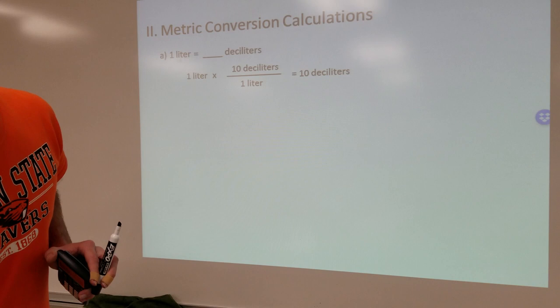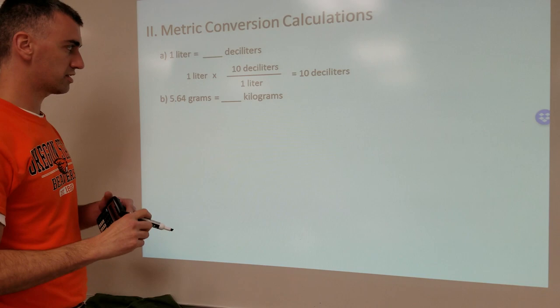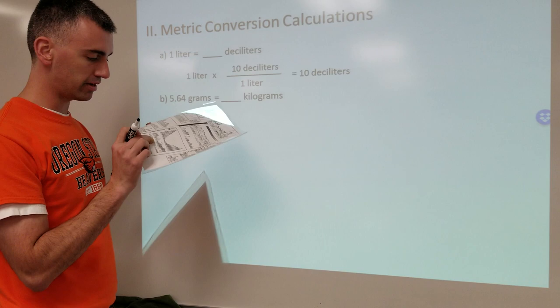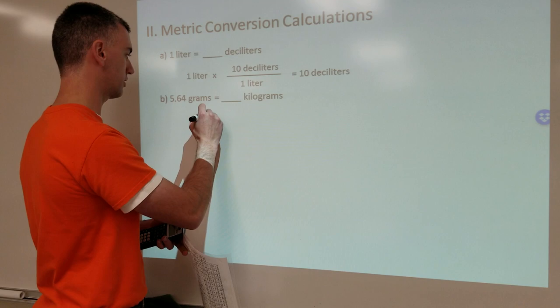5.46 grams equals blank kilograms. So once again, our plan before we do anything. Can you convert grams to kilograms? You look at the chart — kilogram, kilo means a thousand. So a kilogram is a thousand grams, meaning you can do the conversion directly off the chart. We're going to go grams to kilograms in a single-step conversion.